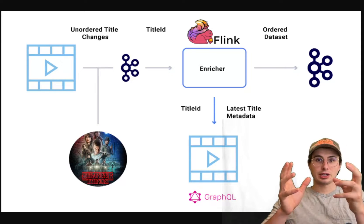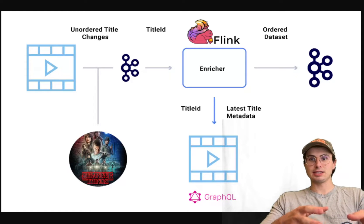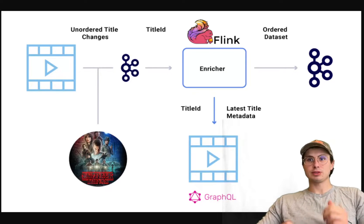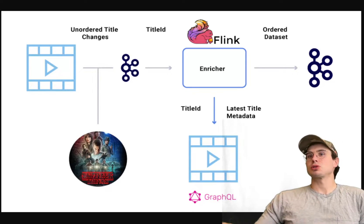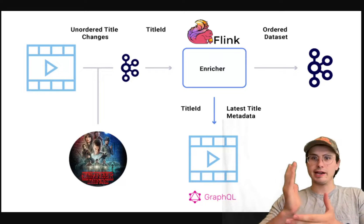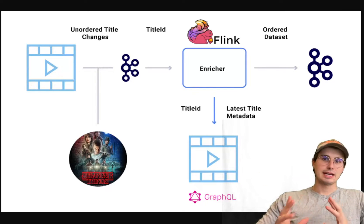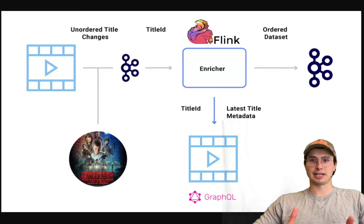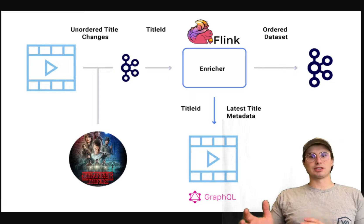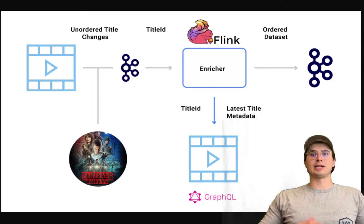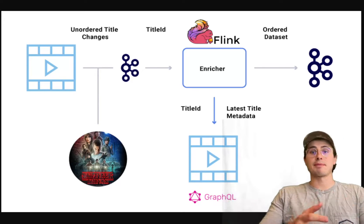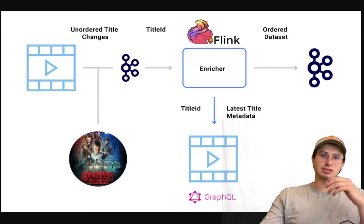This first principle revolves around choosing your common components wisely because it's foundational to creating an effective data architecture. Components that everyone in your business needs to interact with should be carefully considered, because choosing the wrong component introduces friction across the entire organization. This involves selecting standardized, widely supported, and versatile components that integrate seamlessly with various pieces of your architecture, reducing complexity, lowering costs, and enhancing maintainability versus having every team use different components to accomplish the same use case.